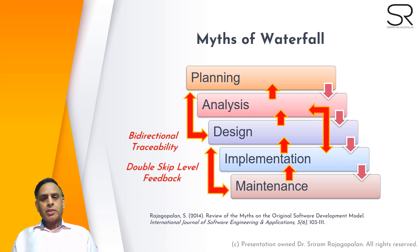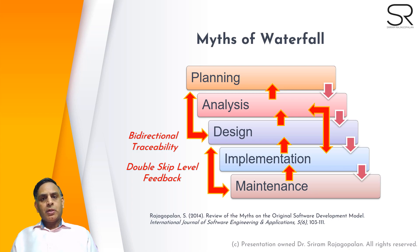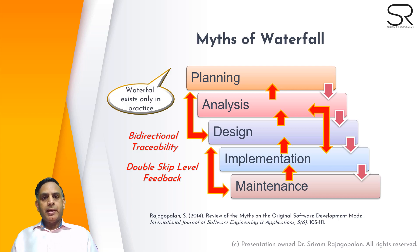Not only did Royce stop there — he came back and said we need bi-directional traceability at two levels above as well. That means double-skip-level feedback was included: if maintenance didn't work, go to design; if design didn't work, go to planning; if implementation is failing, go to analysis. These thoughts right away demystify waterfall — waterfall only existed in people's minds. Practice created a non-existent theory and then blamed the theory for why projects failed.